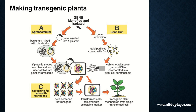This can also be achieved by the gene gun method. Here the gene is replicated and gold particles are coated with the DNA. These coated particles are used in the gene gun procedure — cells are shot with the gene gun and the DNA gets incorporated into the plant DNA. After incorporation, the procedure converges: cells are screened, transformed cells are selected, and the new plant with the desired character regenerates from a single transformed cell.